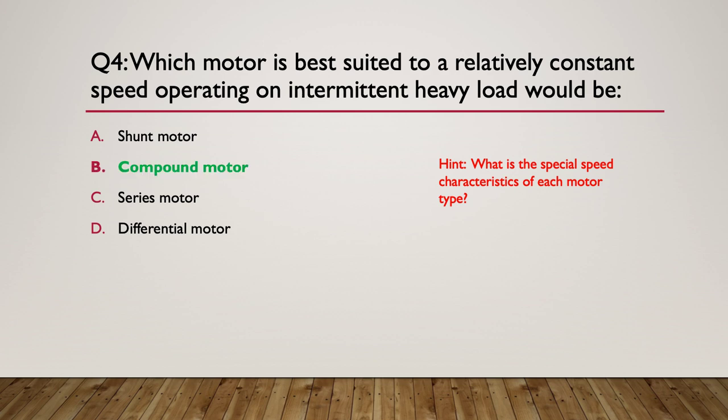So the answer is a compound motor. It kind of gives you the best of both worlds — it's going to give you good torque, good constant speed, and will cope with loads that fluctuate or are intermittent.